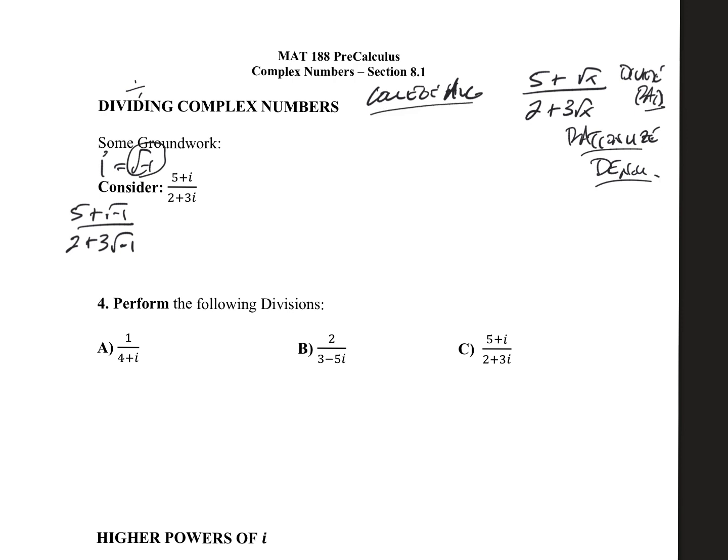Going back again to our college algebra days, what we did to do something like this is we used the conjugate. As you saw in the earlier video, when I multiply a complex number to its conjugate, the complex part goes away. And that's basically what I want in rationalizing the denominator. I want to clear the radical from the denominator.